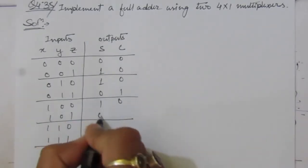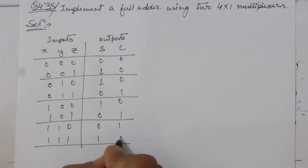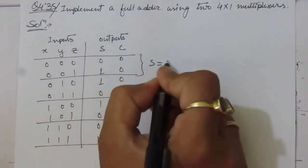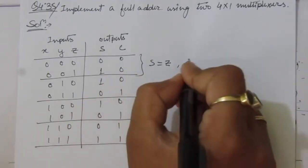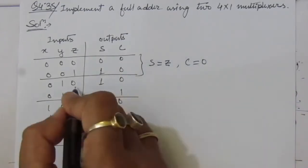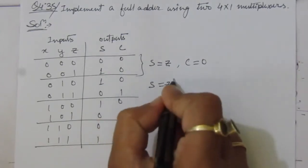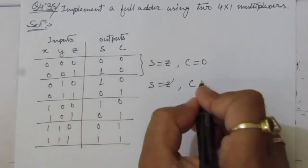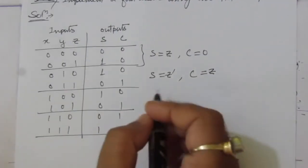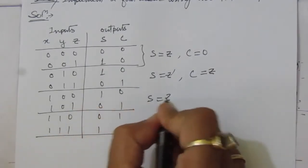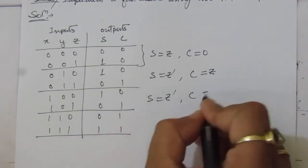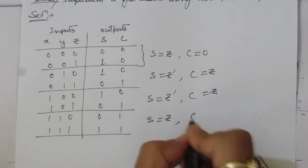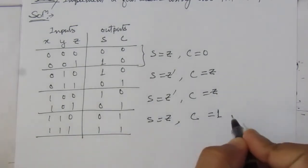1+0+1: sum is 0, carry is 1. 1+1+0: sum is 0, carry is 1. 1+1+1: sum is 1, carry is 1. Now we can see the patterns for each pair. For the first pair (x=0, y=0): sum equals z, carry equals 0. For the second pair (x=0, y=1): sum equals z-bar, carry equals z. For the third pair (x=1, y=0): sum equals z-bar, carry equals z. For the fourth pair (x=1, y=1): sum equals z, carry equals 1.